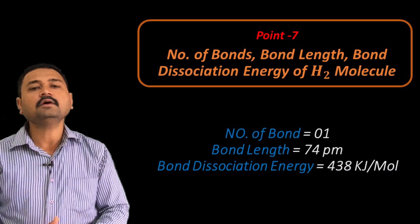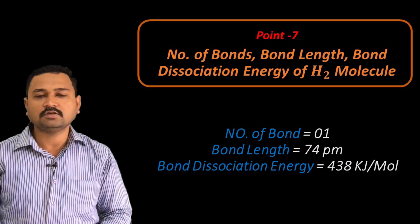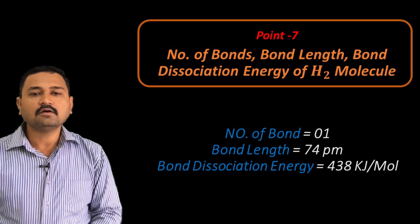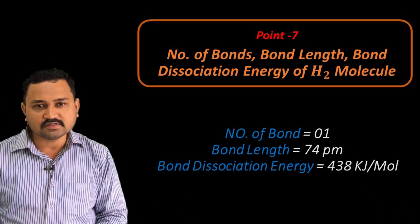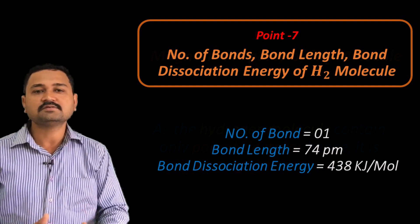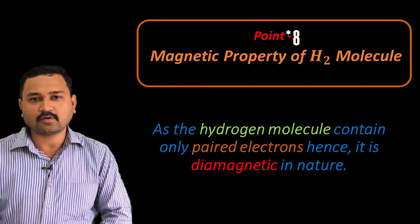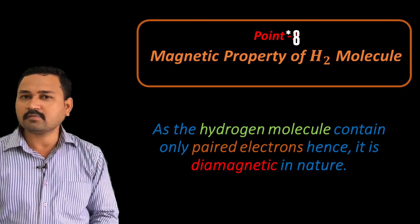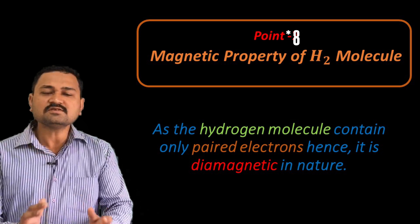Point number seven: remember the number of bonds, bond length, and bond dissociation energy for H2. The number of bonds is 1, as bond order is 1. The bond length is 74 picometers. The bond dissociation energy for two hydrogen atoms is 438 kilojoules. Point number eight is the magnetic property. All electrons present in the bonding molecular orbitals are paired electrons, hence the hydrogen molecule is diamagnetic in nature.